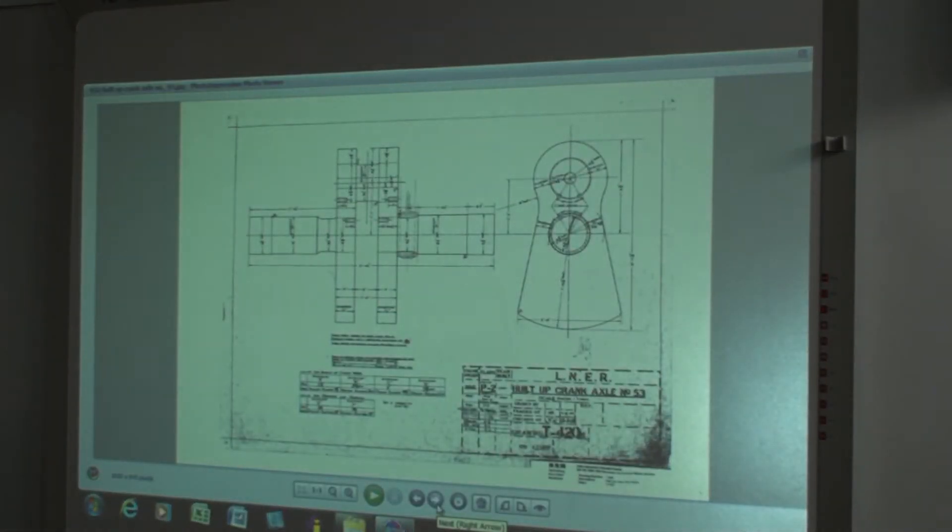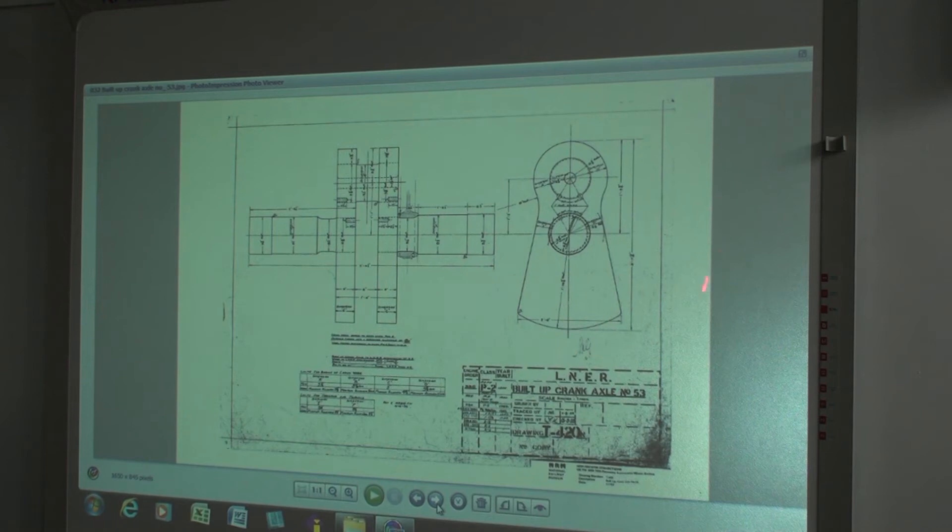And just another example of excellent draftsmanship, this is the main driving axle. So all these counterweights, they're not just there for fun, they're there actually to balance out the eccentricity of the rods.